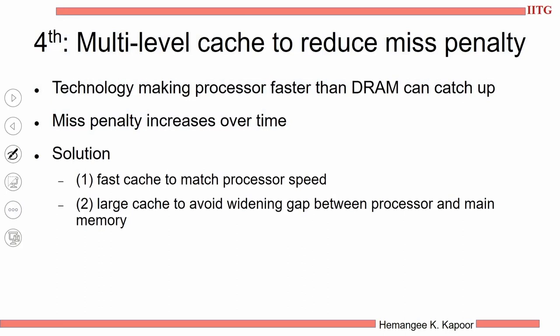At the same time we want the caches to be faster — a very fast cache which matches the processor speed, and at the same time we want a larger cache so that we can reduce the widening gap between the processor and the main memory. Main memory is slower, so when we go there we might as well bring more and more data and keep storing it here so that our misses are fewer. So our objective is we want a large cache because DRAM is slow, but at the same time we want a fast cache because the processor is fast, and these two are conflicting requirements.